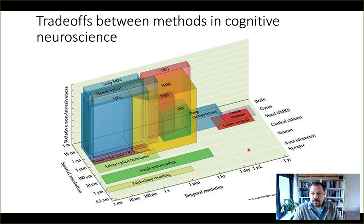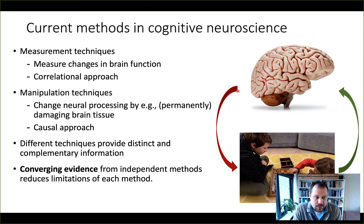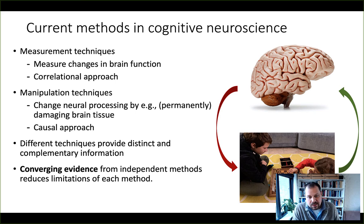The current methods in cognitive neuroscience commonly used in neuroeconomics can be subdivided into two types: measurement techniques, which include neuroimaging, and they measure changes in brain function. This is purely a correlational approach — you have someone performing a behavior, and you observe the activity in certain brain areas, giving a correlation between behavior and neural activity.